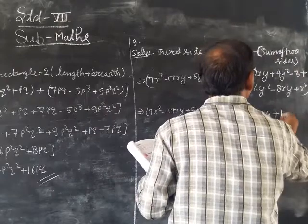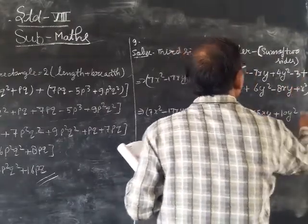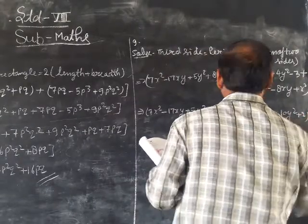Plus 6y² plus 4y², so 6 plus 4 is 10y². Minus 3 plus 5 gives plus 2. Open the bracket.